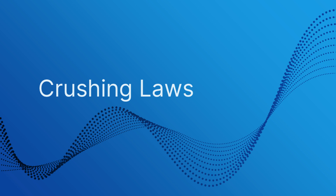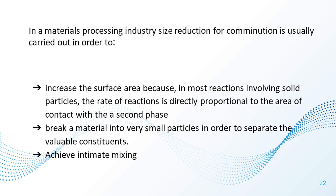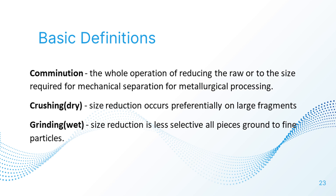Crushing laws are governed by three laws: Rittinger's Law, Kick's Law, and Bond's Law. In material processing, size reduction for comminution is carried out to increase surface area — since the rate of reactions involving solid particles is directly proportional to the area of contact — and to break material into very small particles to separate valuable constituents. Comminution is the whole operation of reducing the raw ore to the size required for mechanical separation or metallurgical processing.